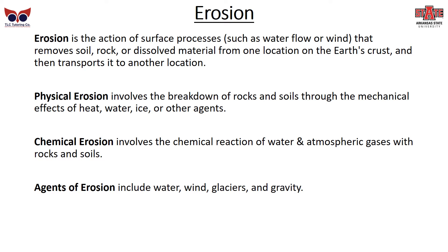Erosion is the action of surface processes, such as water flow or wind, that removes soil, rock, or dissolved material from one location on the Earth's crust and transports it to another location. Physical erosion is the breakdown of rocks through mechanical effects like heat, water, and ice. Chemical erosion is a chemical reaction of water and atmospheric gases with rocks and soils. Agents of erosion include wind, water, glaciers, and gravity.